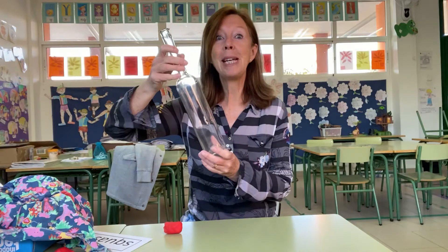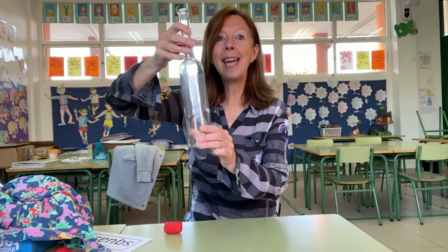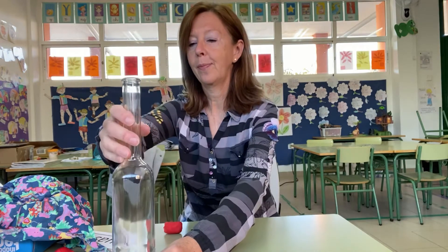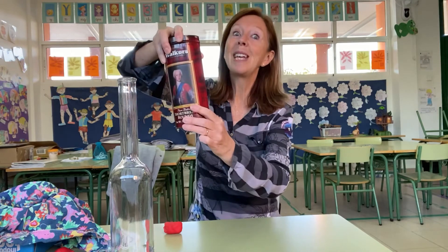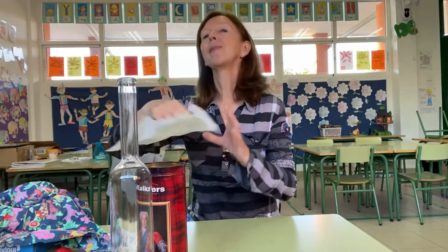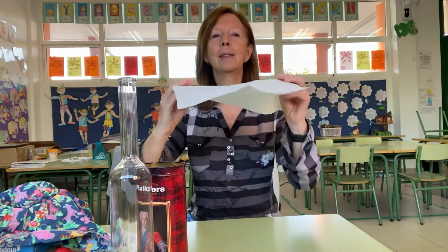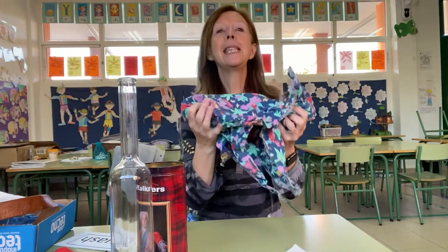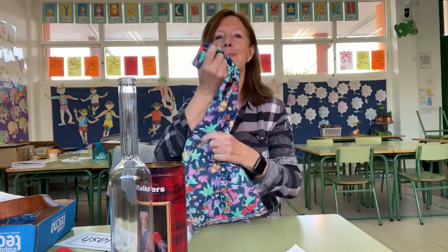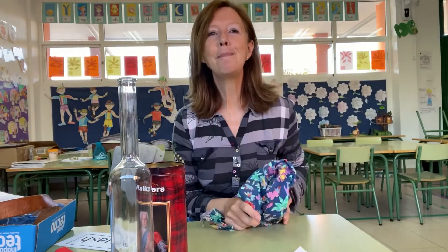Are you ready? This is made of glass. Glass is rigid. This is made of metal. Metal is rigid. This is made of paper. Paper is bendy. This is made of fabric. Fabric is bendy.